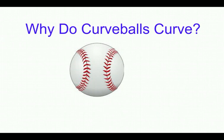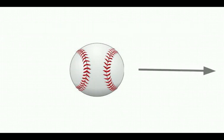Let's suppose you've thrown a baseball so that it's traveling this way, but it also happens to be spinning like this. What we want to do is look at how the air will travel around the sides of the ball as the ball travels through the air.